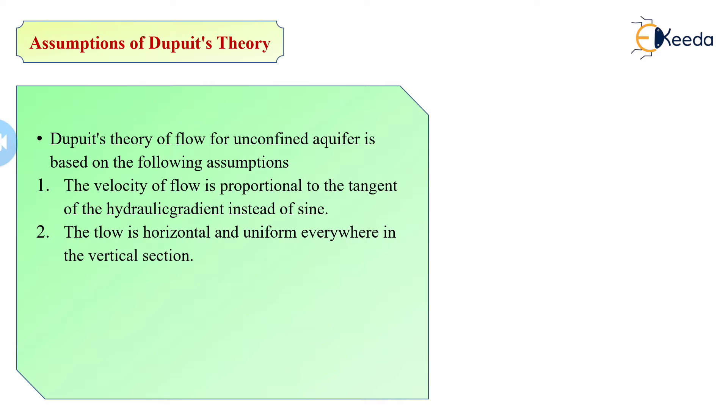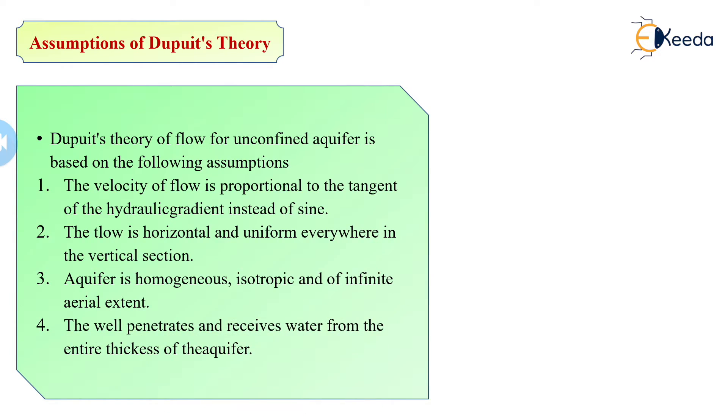Next, the flow is horizontal and uniform everywhere in vertical section. Then aquifer is homogeneous, isotropic and of infinite areal extent. Next, the well penetrates and receives water from the entire thickness of the aquifer.